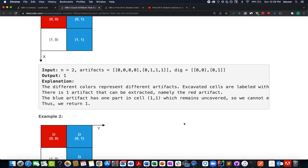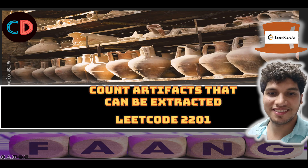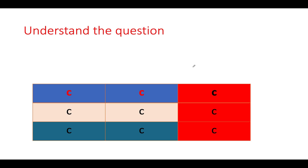Let's quickly walk through the presentation — I'll walk you through the example as well as the algorithm. This is LeetCode 2201, a medium-level question, though I feel it's actually an easy question. Let's consider a hypothetical scenario: there is a grid of size n×n which is completely covered with mud.